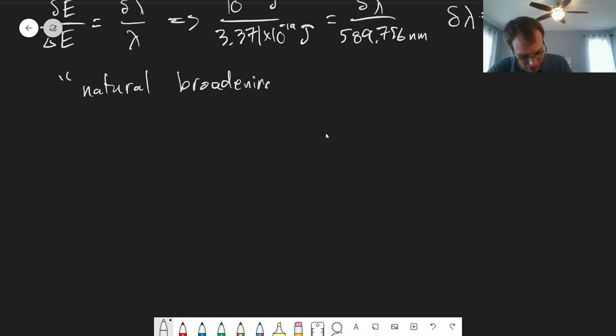Or lifetime broadening because it's related to the lifetime of the states that you're looking at. And this is the fundamental limit of how narrow your lines can possibly get.